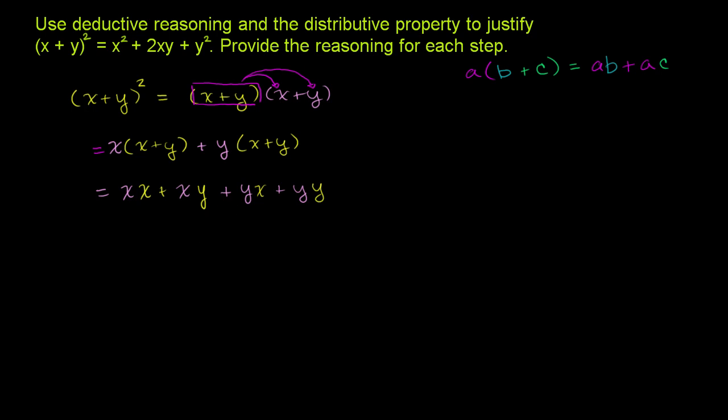Now, what do each of these things equal? x times x, that is the same thing as x². So this is equal to x². This right here, xy, we have 1xy. But then we have yx is also the same thing as xy. Doesn't matter what order you multiply it in. So xy plus xy is 2xy. And then this last term right here, y times y, that's the same thing as y².